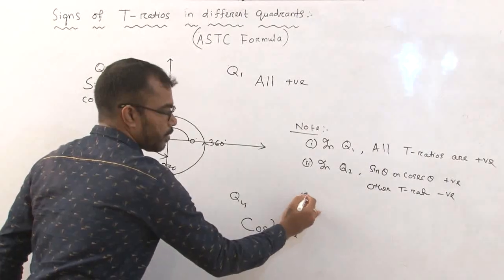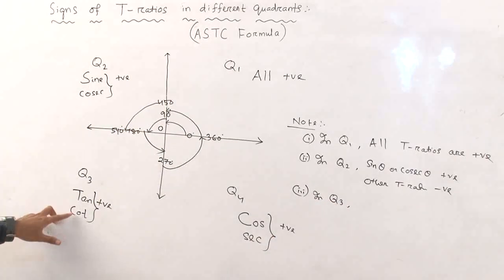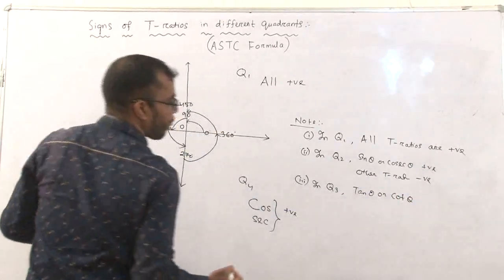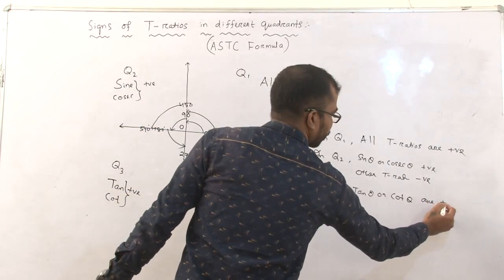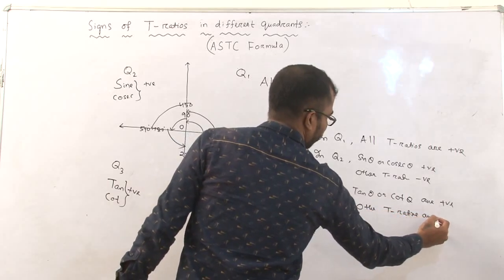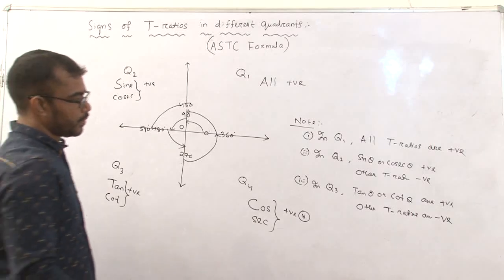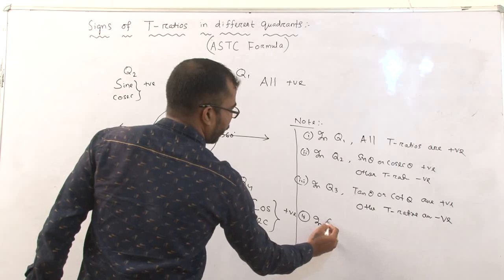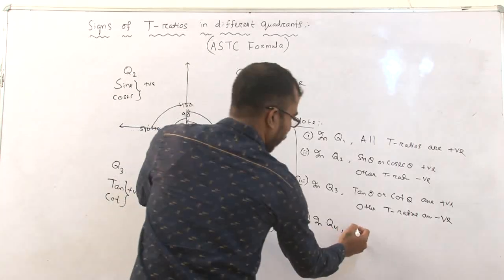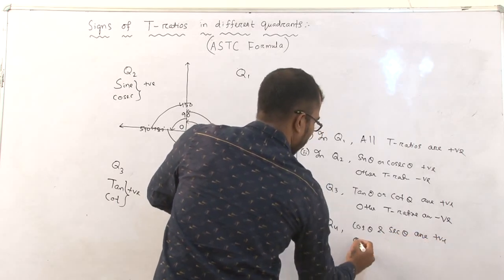In Q3, the third quadrant, tan and cot are positive and all other t-ratios are negative. In Q4, the fourth quadrant, cos and sec are positive and all other t-ratios are negative.